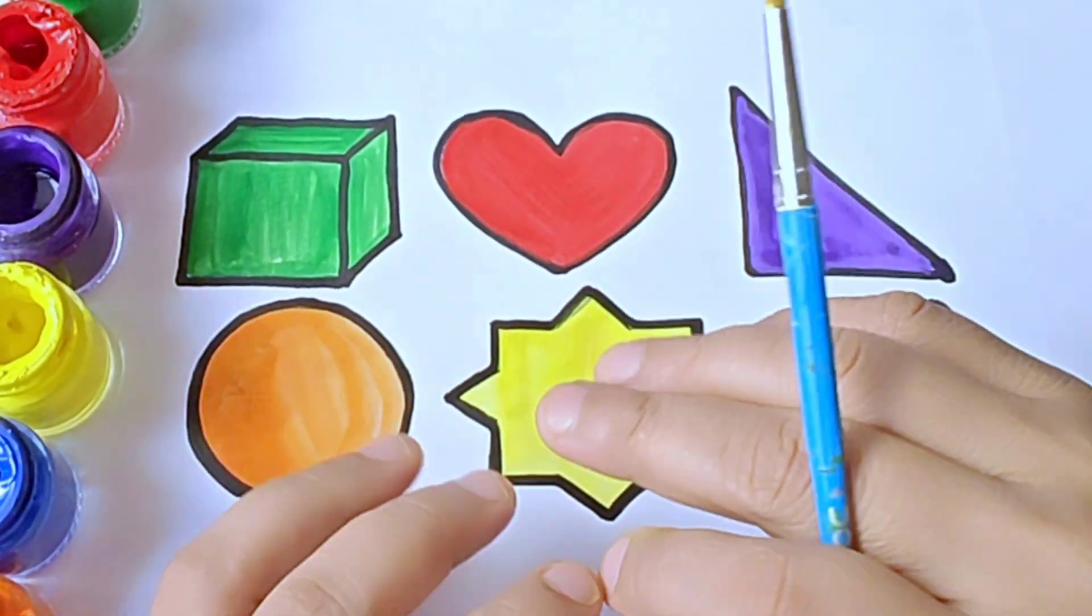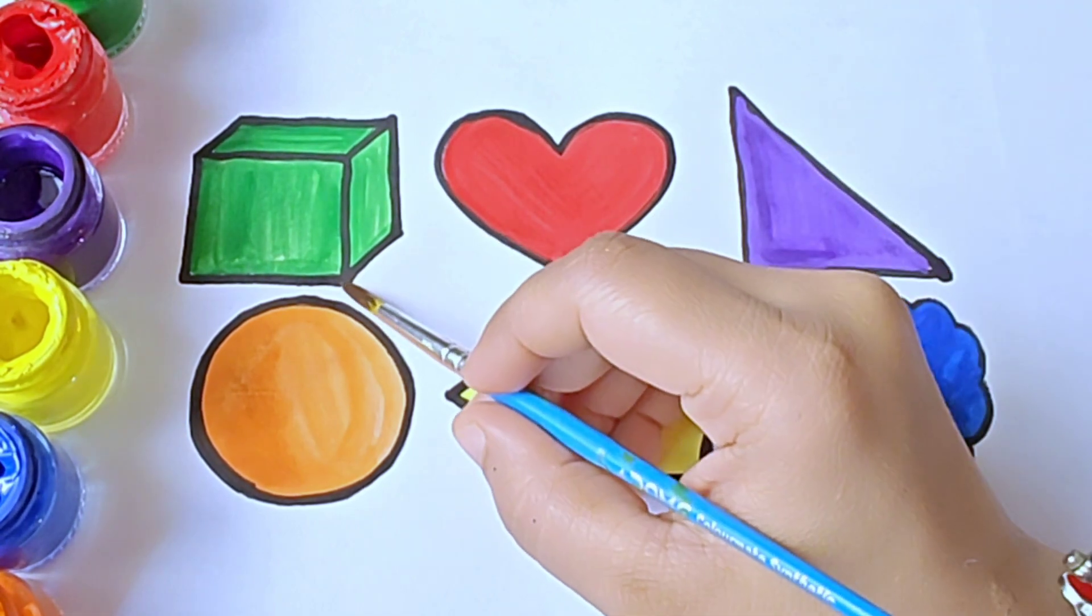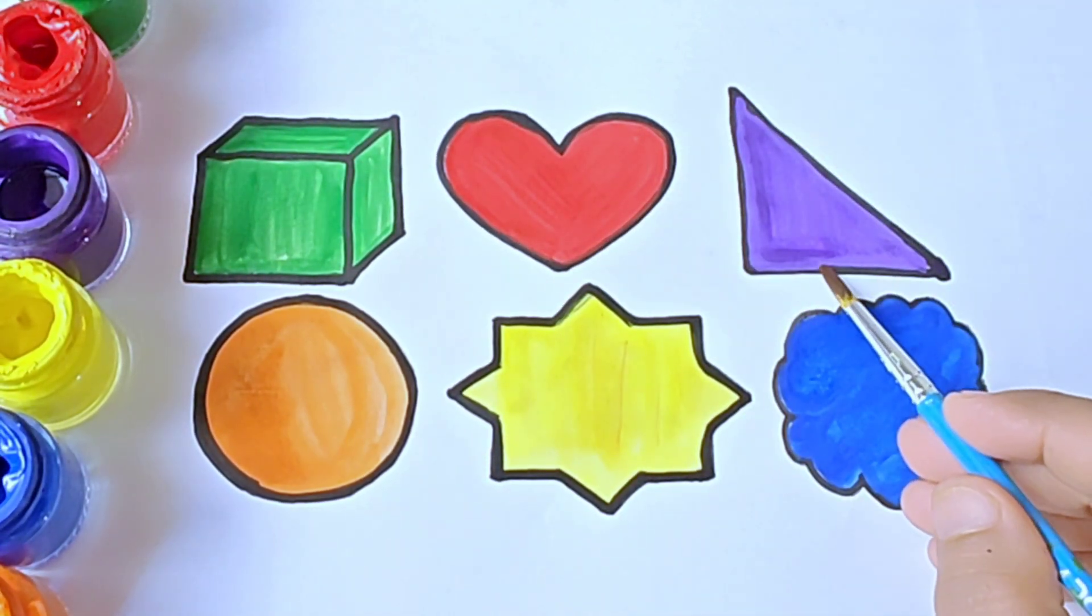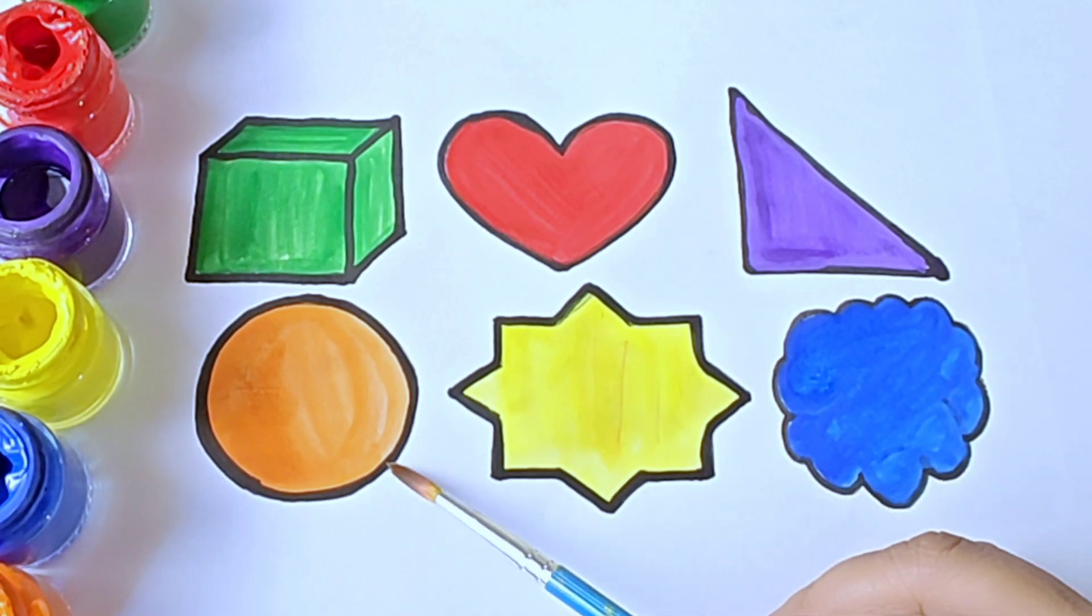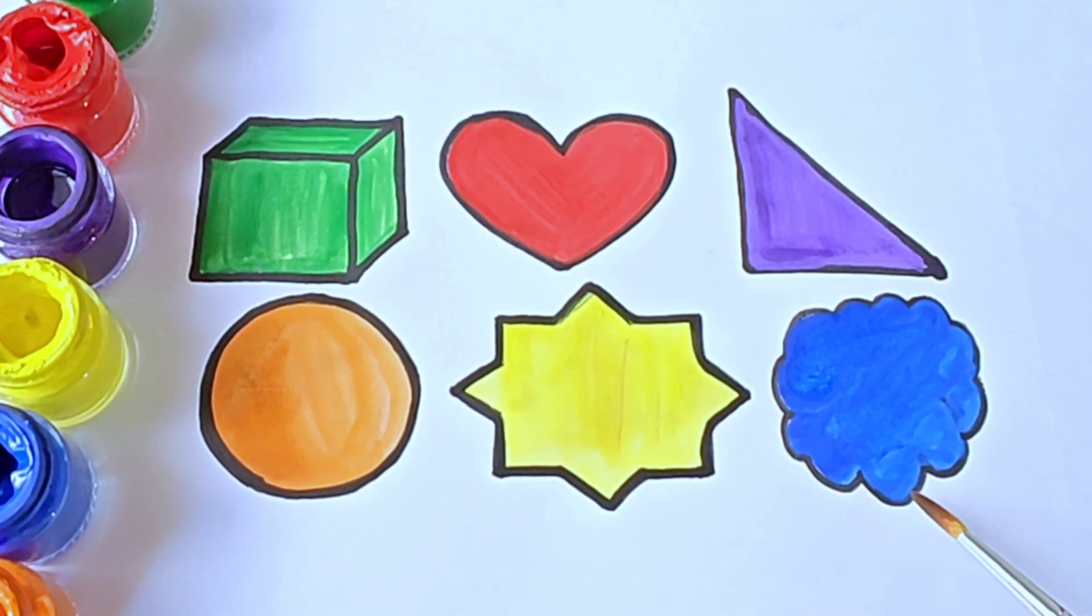Kids, let us recall the shape name and color name once again. It is cube green color. Heart red color. Right triangle violet color. Circle orange color. Eight pointed star yellow color. Cloud blue color.